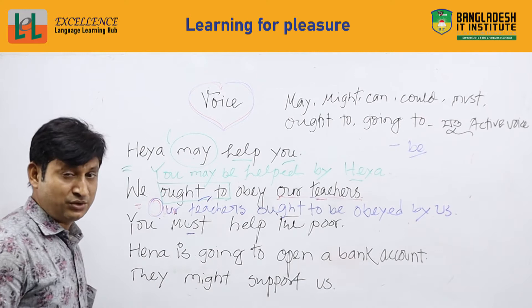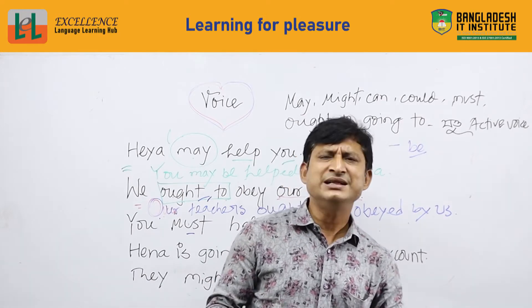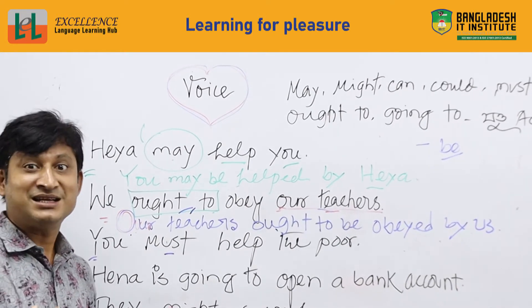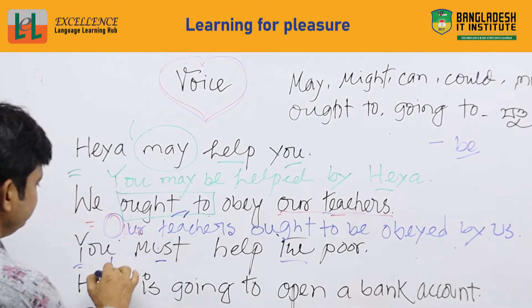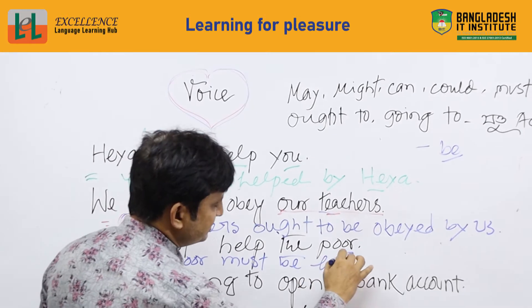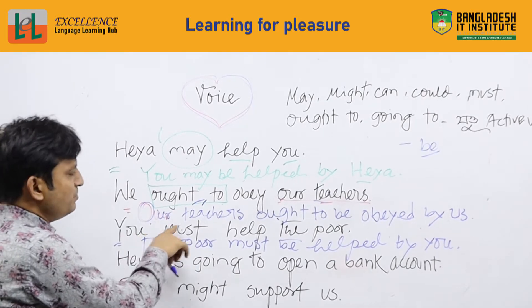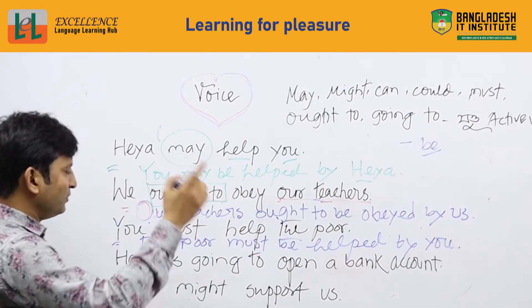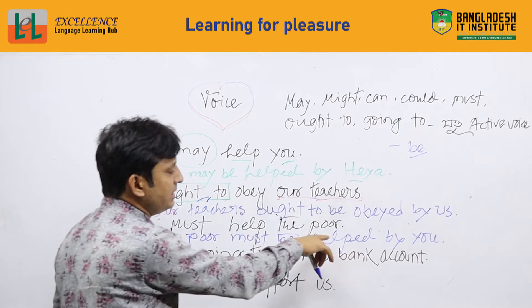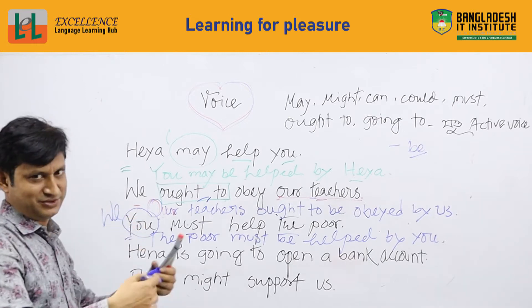The next one is 'must'. Must is mandatory — whenever we give any emphasis on any work or task, we use must. For example: 'You must help the poor.' The active voice is changed into passive as: 'The poor must be helped by you.' So 'the poor' is the new subject, then 'must be helped', then 'by you'.